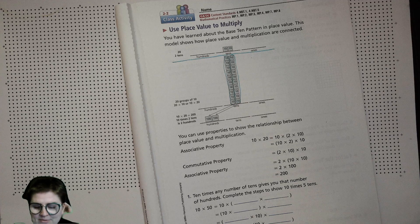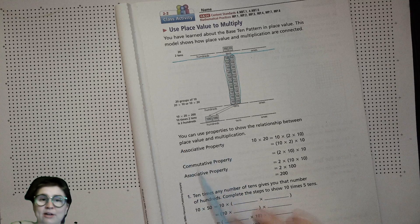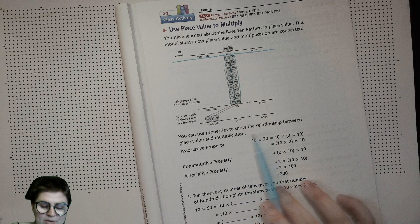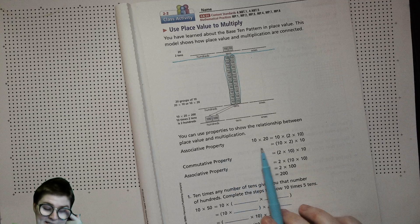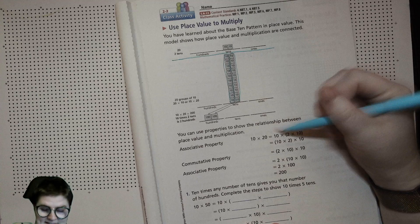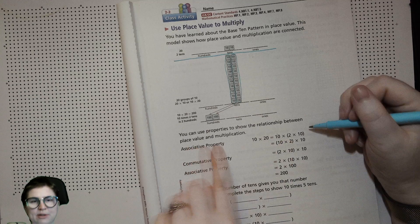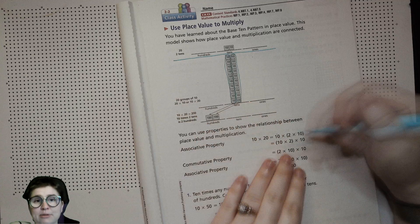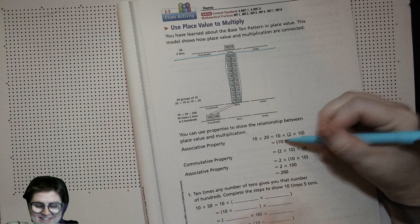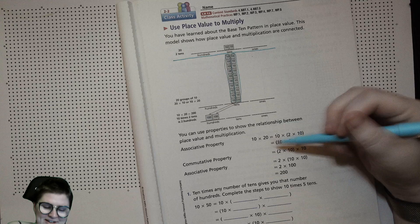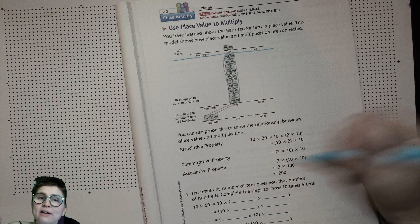You can use the properties, which are different rules in math, to show the relationship between place value and multiplication. So here we have 10 times 20, and you can look at that as 10 times (2 times 10). That's because of the associative property. Then you can rearrange the parentheses so it's (10 times 2) times 10.